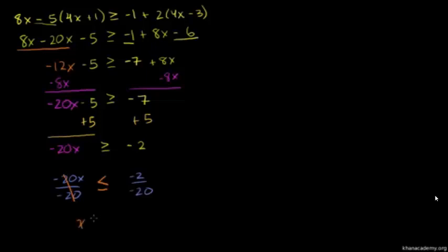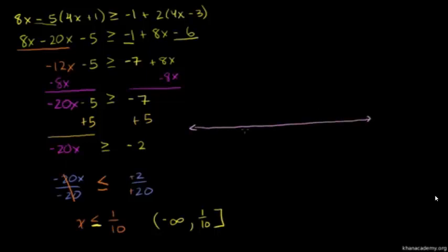The negative 20's cancel out on the left, and the negatives cancel on the right. You get x is less than or equal to 2 over 20, which is 1 over 10. In interval notation, the upper bound is 1 over 10 — and we include it because we have a less than or equal to sign — going all the way down to negative infinity. On the number line, we mark 1 over 10, include it with a closed dot, and shade everything to the left. You can verify any value less than 1 over 10 satisfies this inequality.